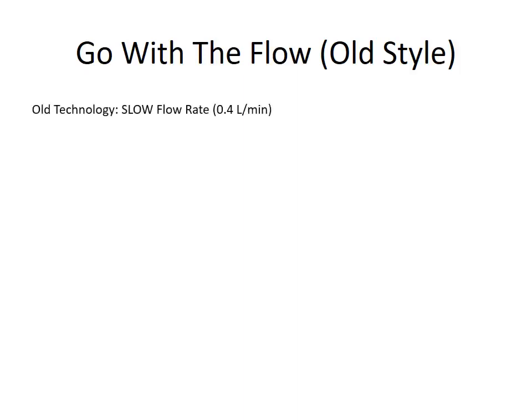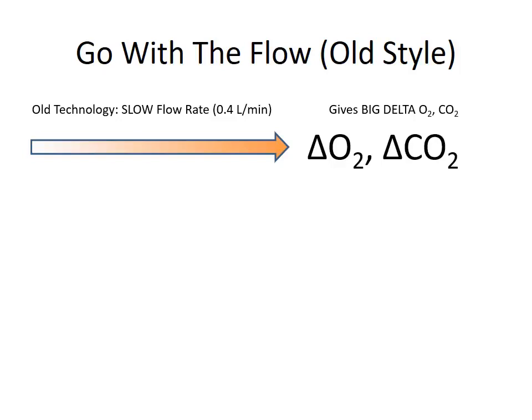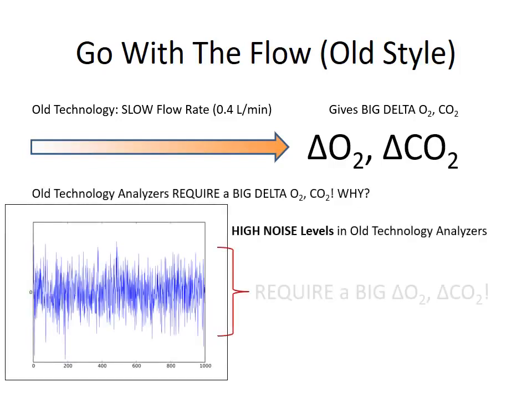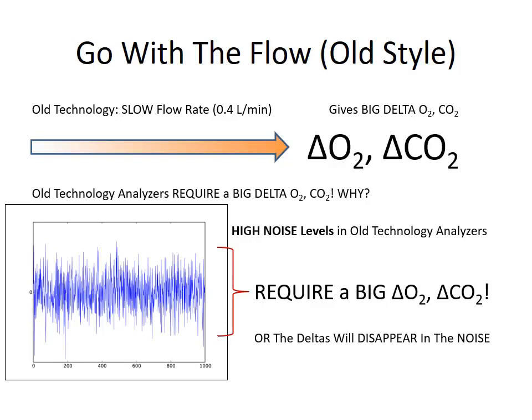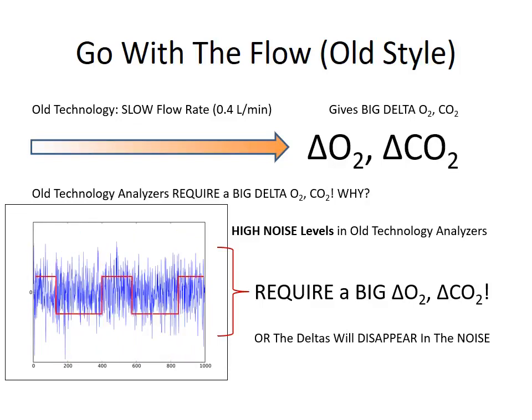So let's look at how the old legacy metabolic phenotyping systems measure metabolic rate — a lot has to do with the flow rate. The old legacy technologies use slow flow rates of about 0.4 to 0.5 liters per minute. That gives a very big delta-O2 and delta-CO2, because the very low flow rate has given the animal plenty of opportunity to change the concentration of oxygen and CO2 in the air. The legacy analyzers require a big oxygen and CO2 delta because of their high noise levels. It is definitely not okay to have a smaller signal and a higher flow rate because then the deltas will just disappear in the noise of the analyzer.